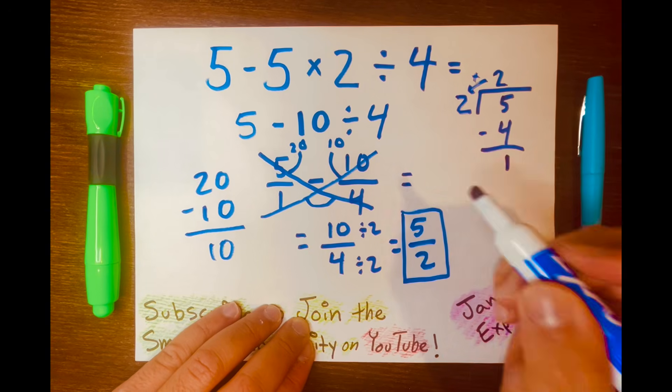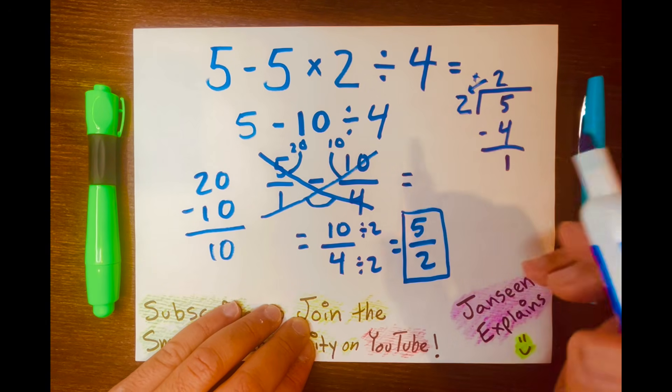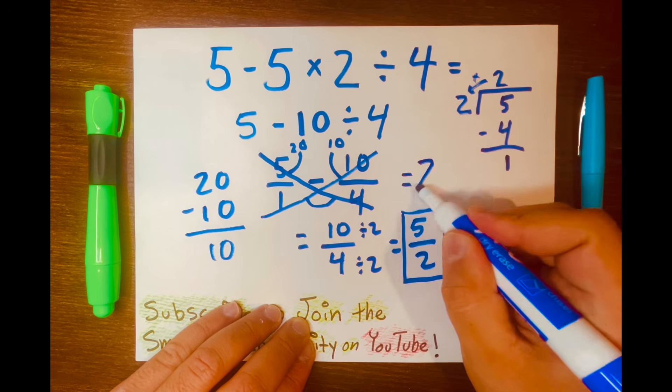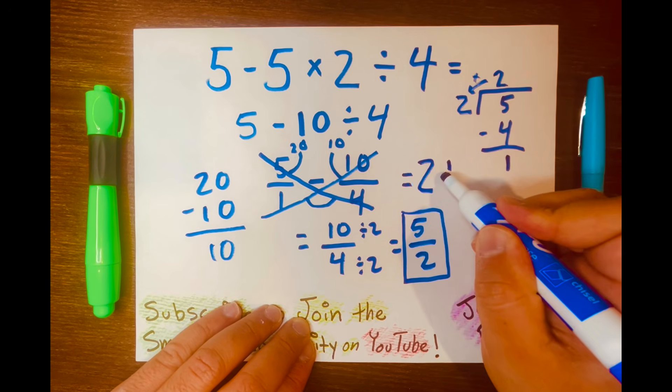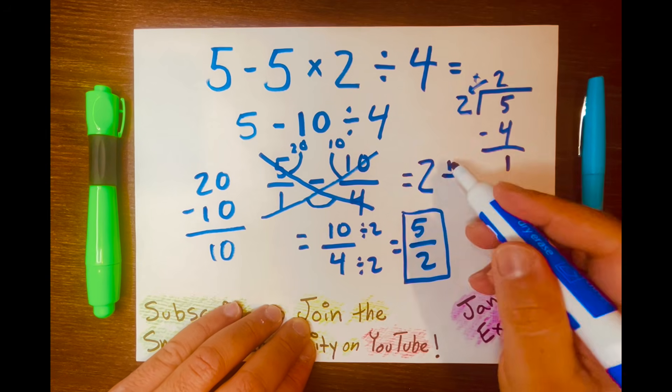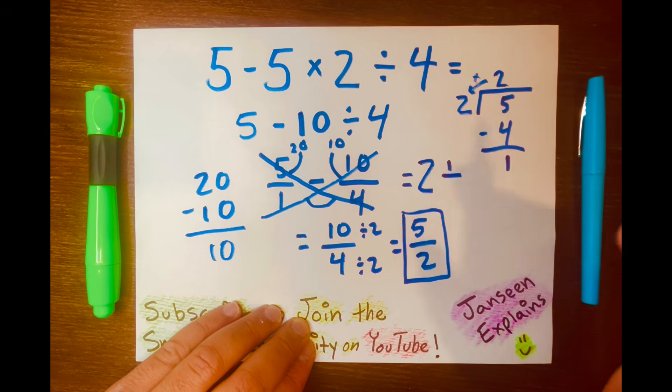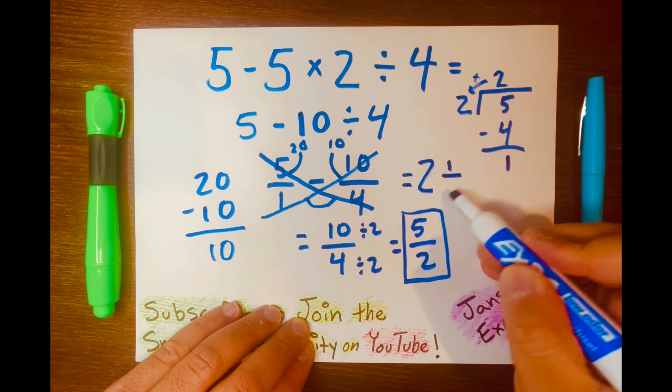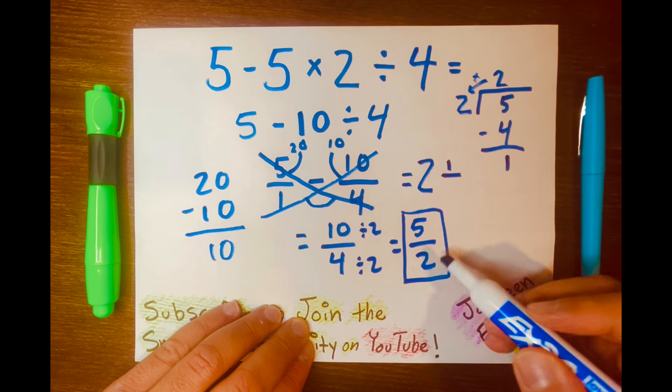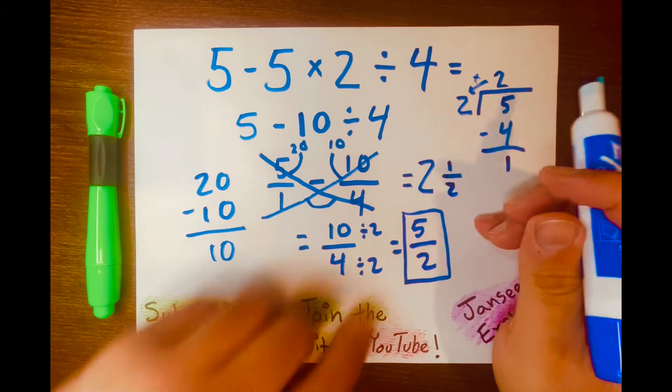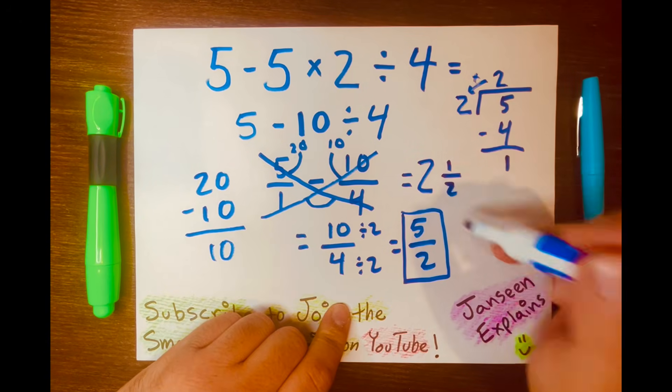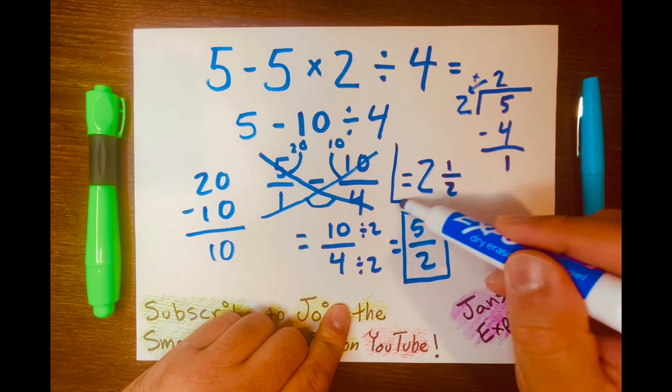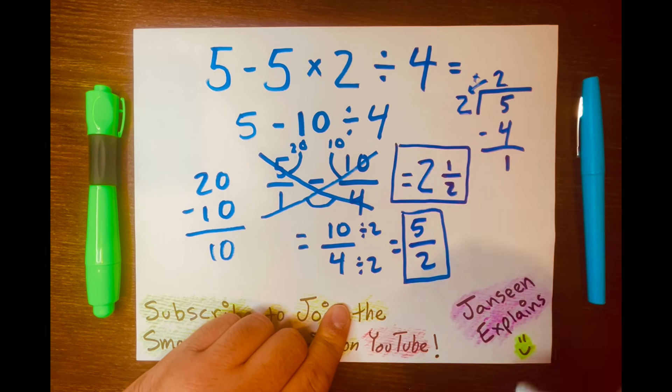So now we can write our mixed number answer. The 2 will be the whole number. And the proper fraction, we get the remainder that goes above the fraction bar. That's called the numerator. And write the denominator that's coming from this divisor. And this will be your mixed number answer.